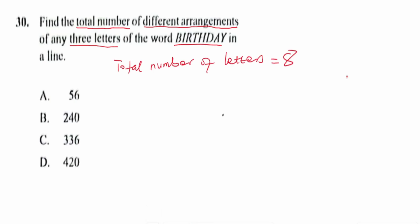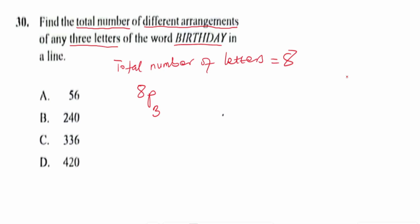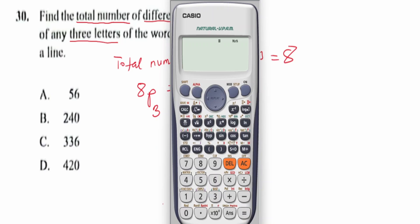All we need to know is the total number of letters in the word and how many letters we are arranging at a time. BIRTHDAY has eight different letters, and we are picking three letters at a time. So the total number of different arrangements will be 8P3 — eight permutation three. We press eight, then shift and the permutation function, then three, hit equals, and that gives us 336.